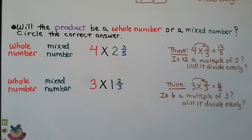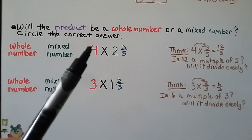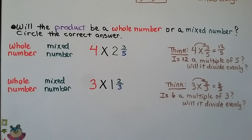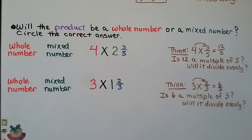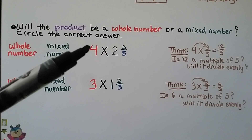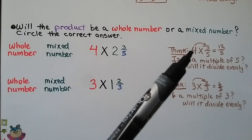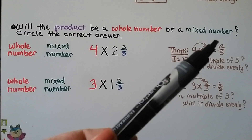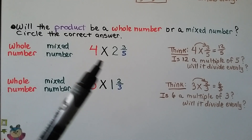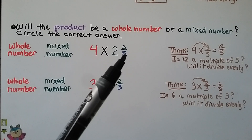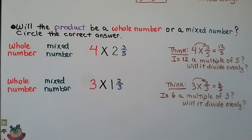Will the product be a whole number or a mixed number? We need to circle the correct answer. For 4 times 2 and 3 fifths: look at the 4 and the denominator 5 in the mixed number. When we multiply 4 times 3 fifths, we multiply 4 to the numerator 3 to get 12 fifths. Is 12 a multiple of 5? No, it won't divide evenly. So we're not going to have a whole number — this 4 is not the same as the denominator 5. The product will be a mixed number.